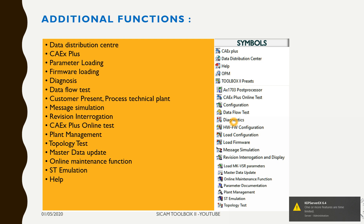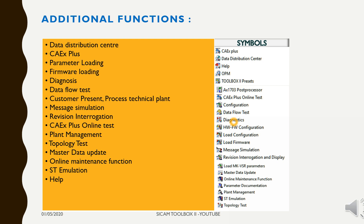Data flow test is used to ensure data is output for the defined station customer, where you can define the identification of the customer. Message simulation allows you to simulate messages within the automation unit. Revision interrogation is used to check the firmware within the automation unit and engineering station. KEX Plus online test is used for testing purposes during commissioning — you do not require any keys to access this module. Plant management is where the database of the entire project is managed, including customer parameters and others. Topology test is used to identify correct data receiving and sending within stations.